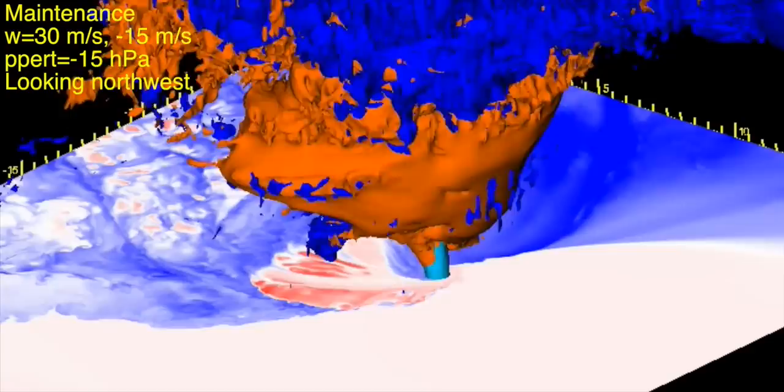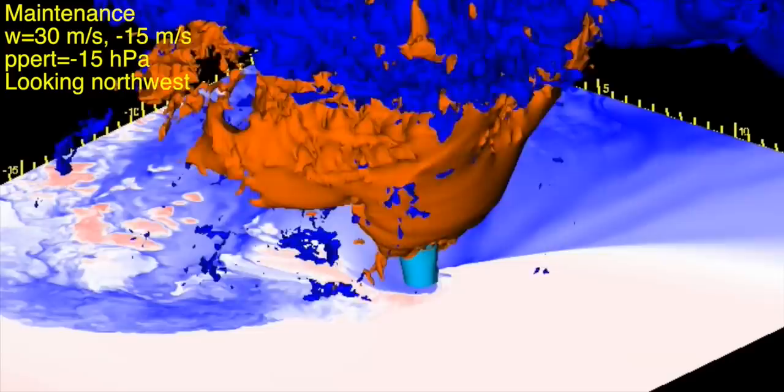This is just a view from afar, just to give you a perspective of the storm updrafts and all the compensating downward motion. As I zoom in here, you'll notice that look at all that warm, yummy RFD air. It's feeding the updraft, and you also have this stream of vorticity coming in on the forward flank that I'm going to focus on next.